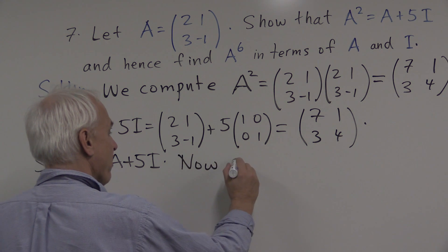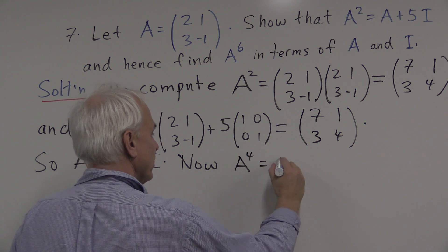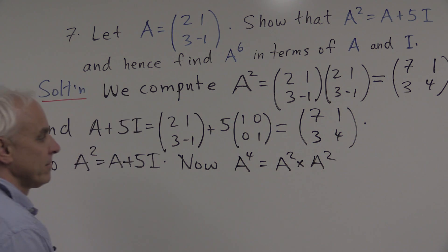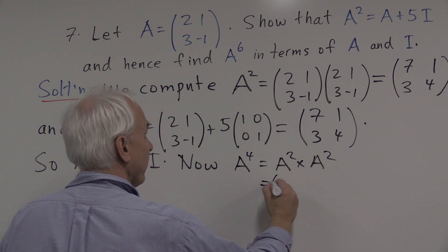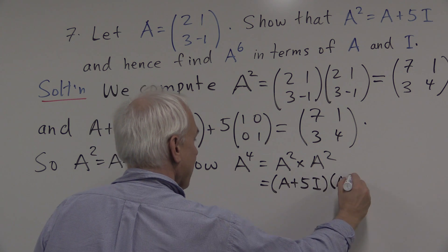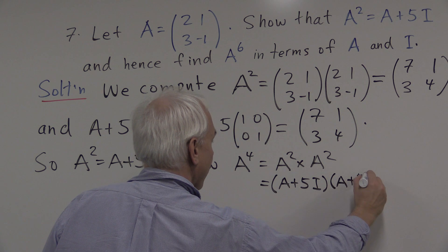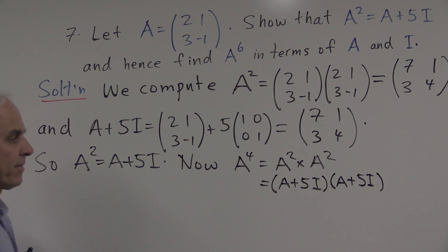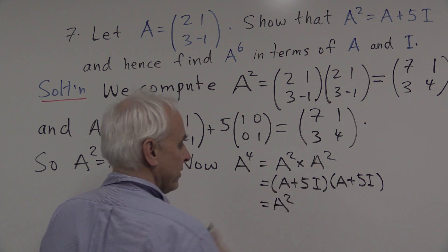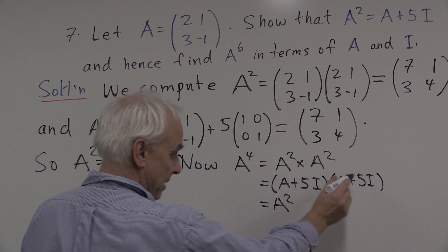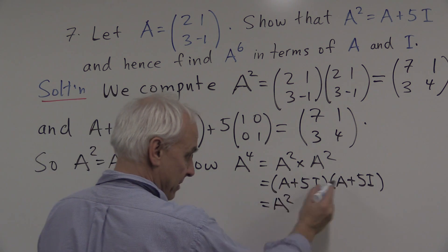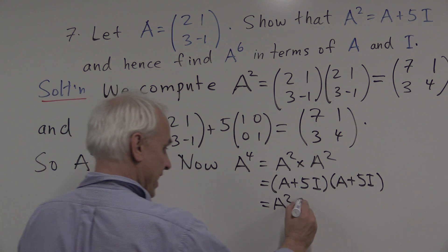Well, let's start a little bit more modestly and look at A to the fourth, which is A squared times A squared. A squared we've decided is A plus 5I. So we can write this as A plus 5I times A plus 5I. And this is going to be A squared. A times 5I will be 5 times A. 5I times A is another 5 times A for a total of 10A.